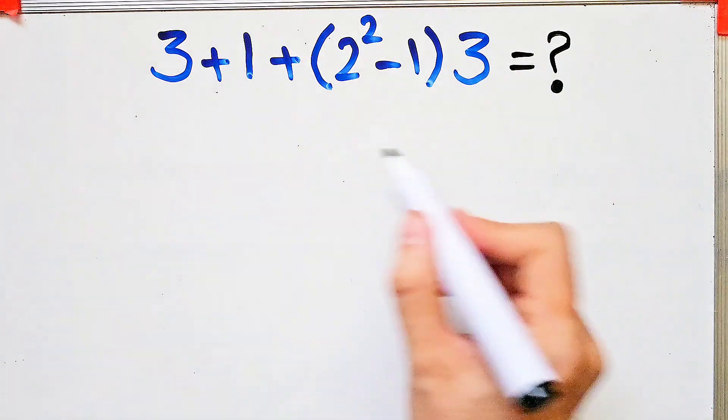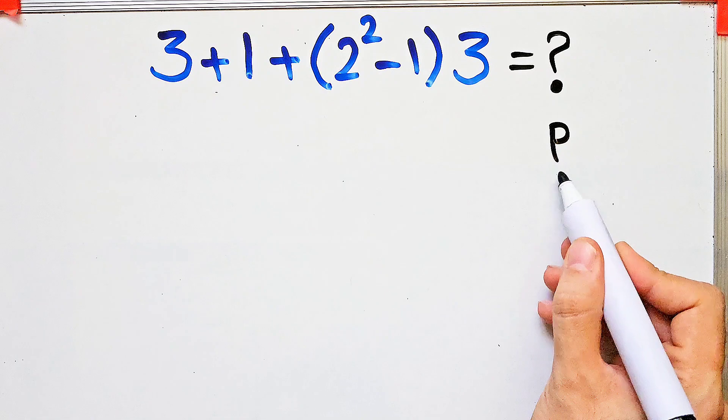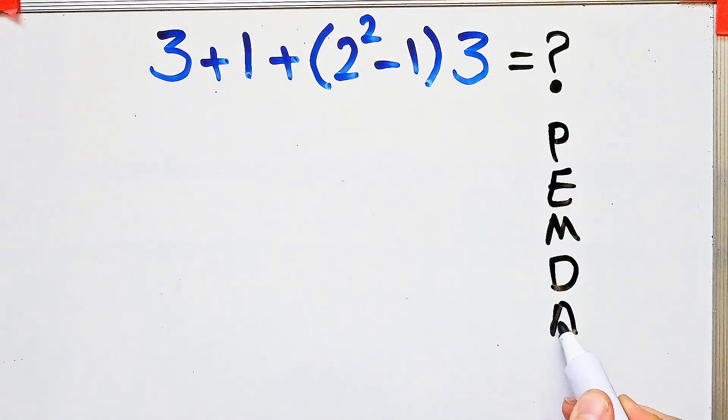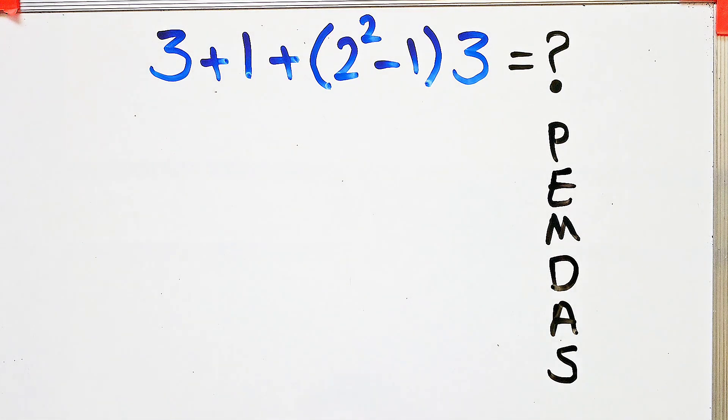PEMDAS shows the priority of mathematical operations. If you don't pay attention to this rule you get the wrong answer. In this rule, P stands for parentheses.